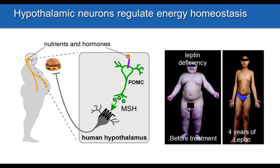Studies in humans and mice have shown that deficiency in leptin or the leptin receptor is sufficient to cause severe early-onset childhood obesity. Since leptin deficiency is due to a deficiency of a hormone, replacement of that hormone can effectively cure the obesity — as shown by one individual treated for four years with leptin, which completely normalized his weight. But more common forms of human obesity aren't due to the defect of a particular gene, and we'd really like to understand how POMC neurons sense hormones like leptin and how they are defective in obesity.